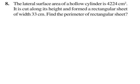Exercise 11.3, Problem number 8. The lateral surface area of a hollow cylinder is 4224 cm². It is cut along its height and formed a rectangular sheet of width 33 cm. Find the perimeter of the rectangular sheet. So, the lateral surface area of the hollow cylinder — the hollow cylinder is in this shape.